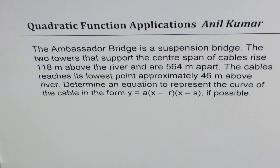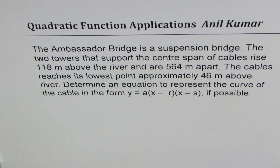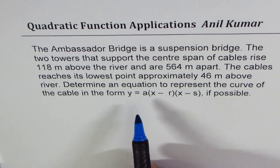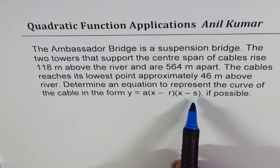I am Ahil Kumar sharing with you a question from my student, and I hope its solution will help you. The Ambassador Bridge is a suspension bridge. The two towers that support the center span of cables rise 118 meters above the river and are 564 meters apart. The cables reach their lowest point approximately 46 meters above the river. Determine an equation to represent the curve of the cable in the form y equals a times x minus r times x minus s if possible.